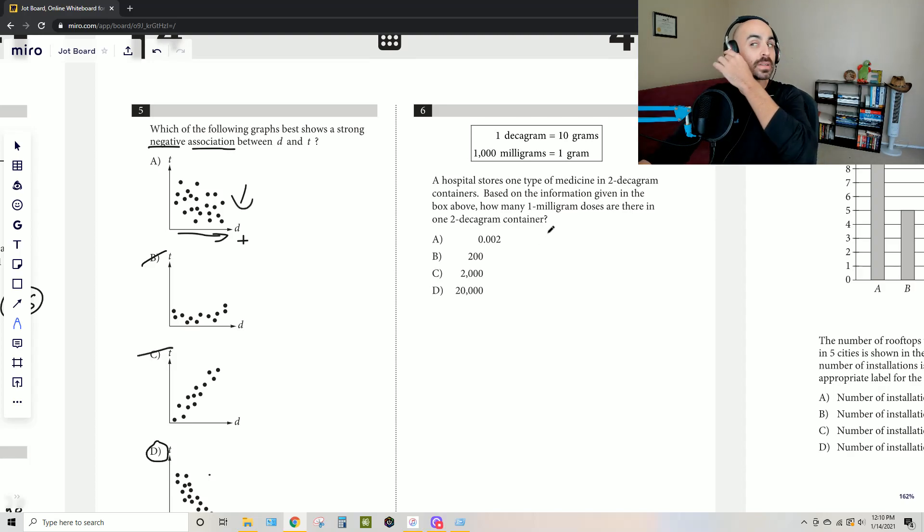One fundamental ability to have on the SAT is dimensional analysis. This is something that's commonly practiced in your chemistry class because you're converting between units such as atoms and moles, if you remember any of that. But that's also super helpful in this situation where we're just trying to get from one unit to the other.